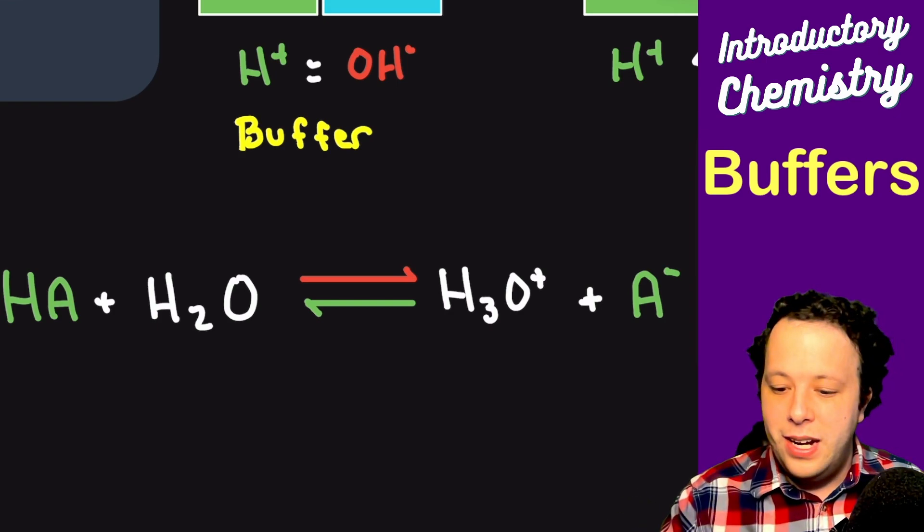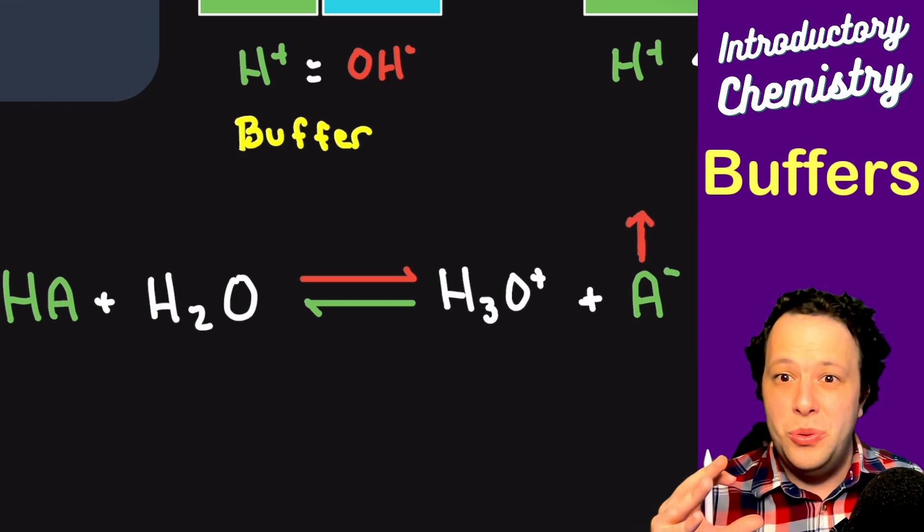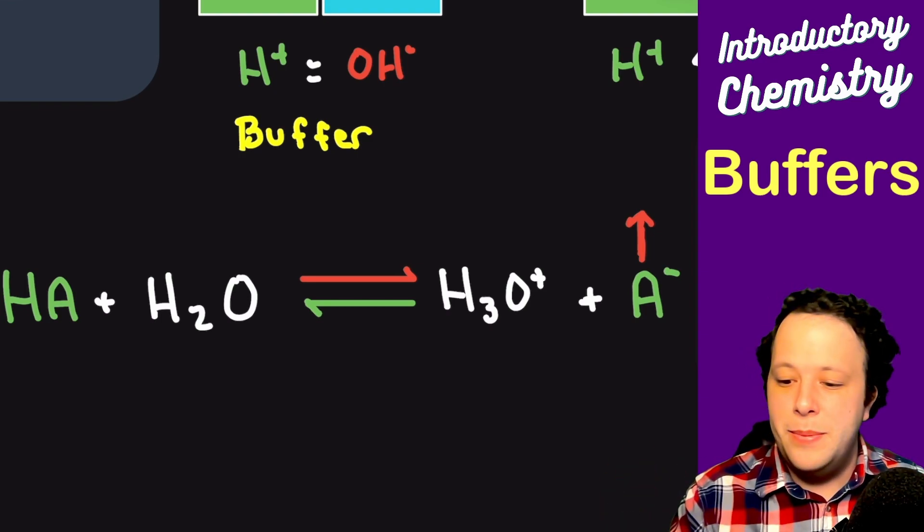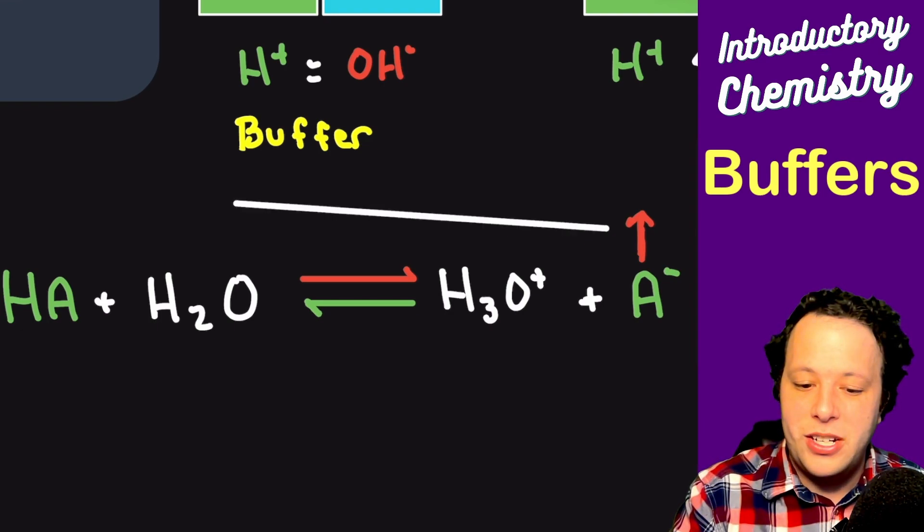The system is going to respond. Instead, it's going to try to shift the reaction backwards. It's like, oh, there's too much product laying around. So in order to change the scales of this reaction and how everything is balanced, it's going to shift it back.